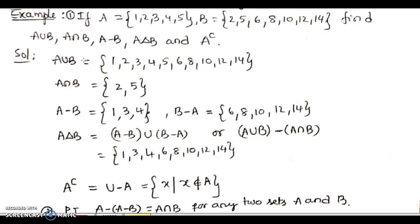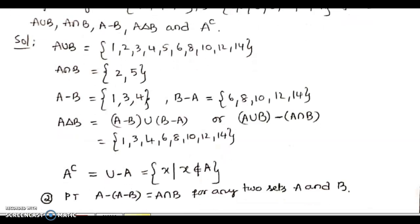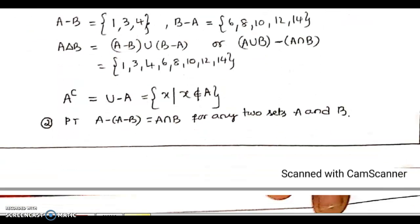Now the calculation of the symmetric difference: finding the union of A minus B and B minus A, we have the symmetric difference A delta B equals {1, 3, 4, 6, 8, 10, 12, 14}. Now, the calculation of complement of A — it is the set of elements from the universal set which do not contain the elements of A. In fact, it is the collection of x such that x does not belong to A.